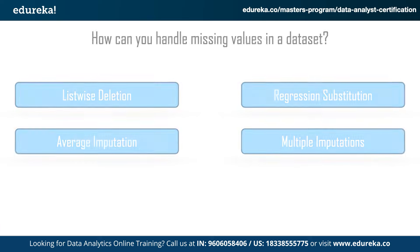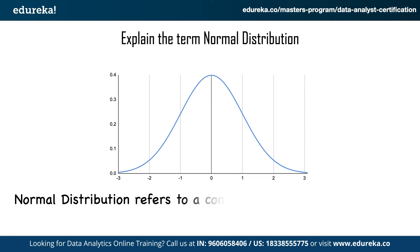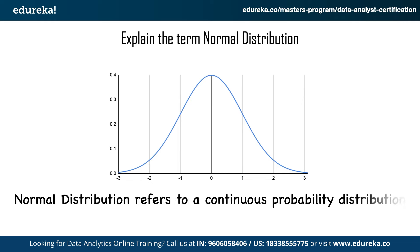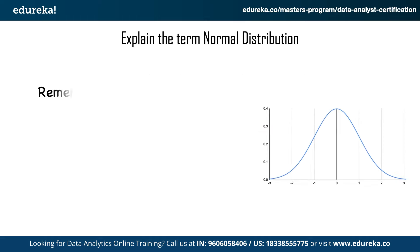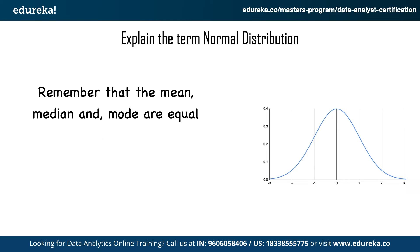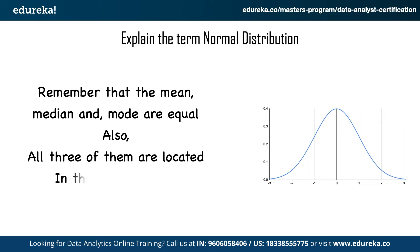The second question in this section is: explain the term normal distribution. Normal distribution is one of the most basic concepts and it refers to a continuous probability distribution that is symmetric about the mean. An important point to remember is that the mean, median, and mode of a normal distribution are equal, and all three of them are located in the center of the distribution.